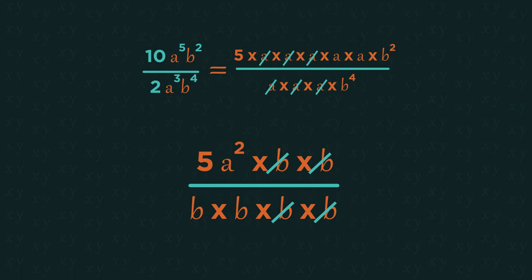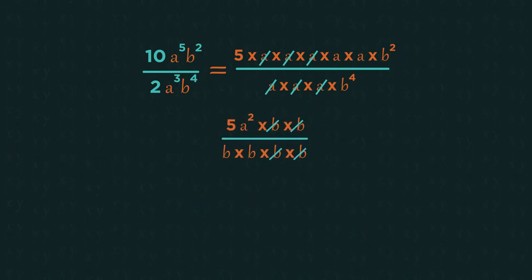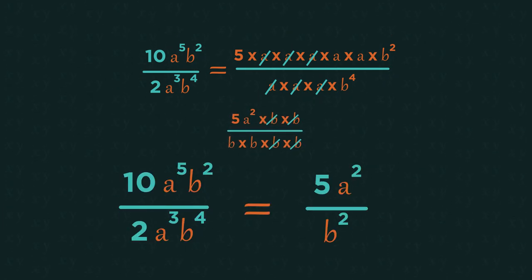And then, the same for the b's. We can cancel out 2 b's, leaving just 2 b's in the denominator, giving us our final answer.